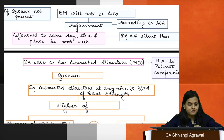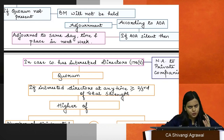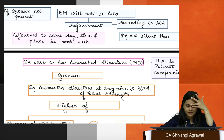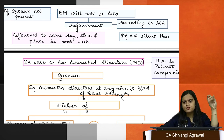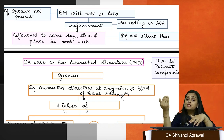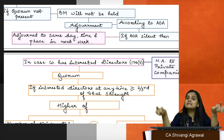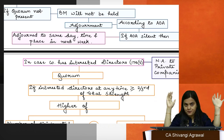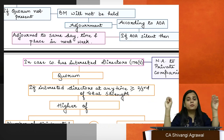If quorum is not present, the meeting will be adjourned according to what the articles say. If articles are silent, it is adjourned to the same day, same place, same time, next week. If quorum is also absent at the adjourned meeting, the meeting will be cancelled. This is different from general meetings, where members present at an adjourned meeting are deemed to be the quorum — that rule does not apply to board meetings.